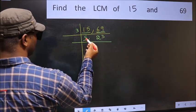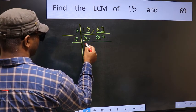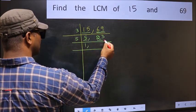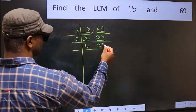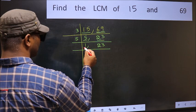Now we have 5. 5 is a prime number, so 5 once is 5. The other number 23 is not divisible by 5, so write it down as is. Now we got 1 here.